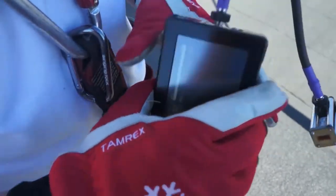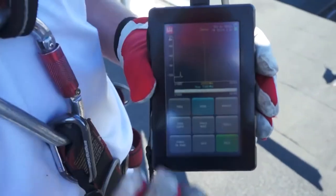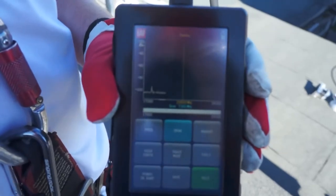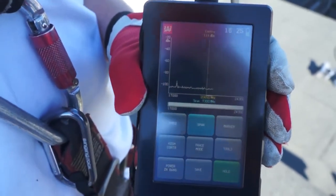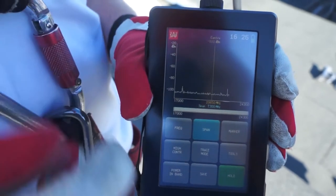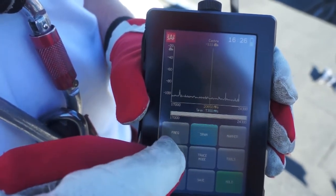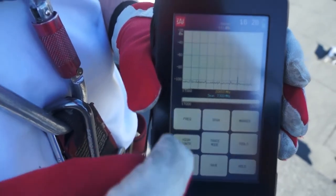Now on the top of the unit is the power button. This is an instant on unit, so you can see it's already powered up and ready to go. Now it does have a beautiful color screen. Unfortunately, it's a bright sunny day, so it's a little bit difficult for me to read. So I'll go ahead and switch it to high contrast to make it very easy to read.